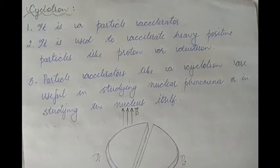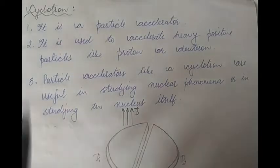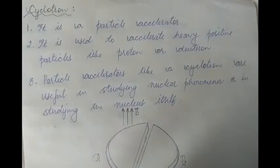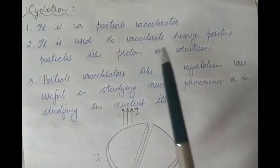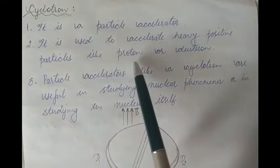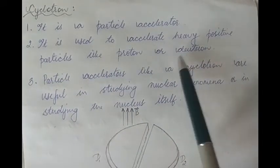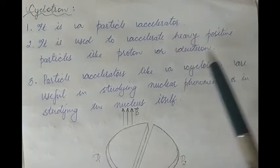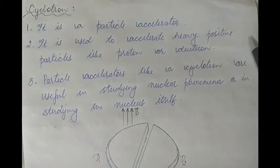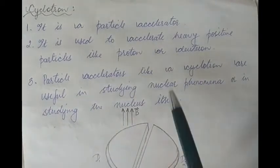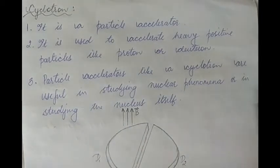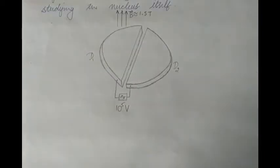In this video today we are going to study about something called a cyclotron, which is a particle accelerator. It is used to accelerate heavy positive particles like a proton or a deuteron. Deuteron is the nucleus of the second isotope of hydrogen, which is deuterium. Particle accelerators like a cyclotron are useful in studying nuclear phenomena or the nucleus itself.